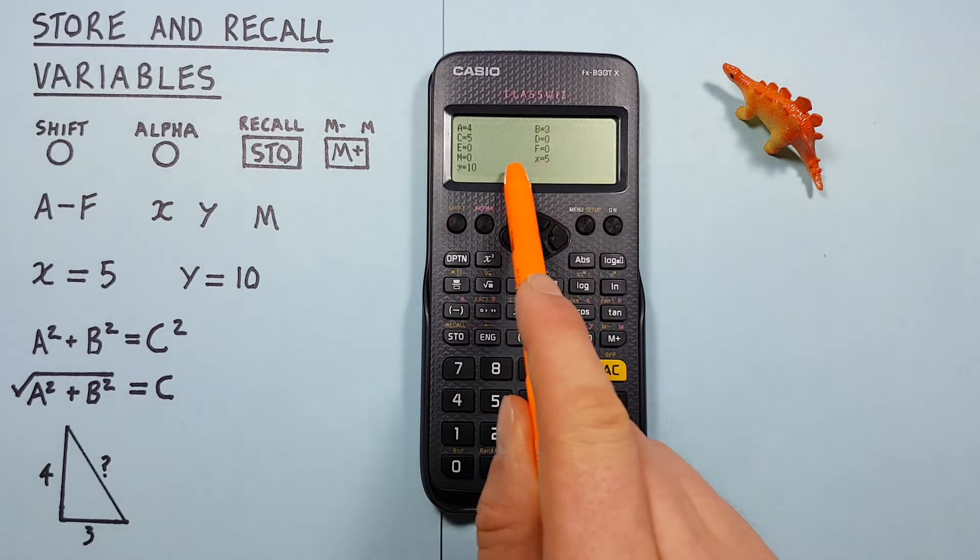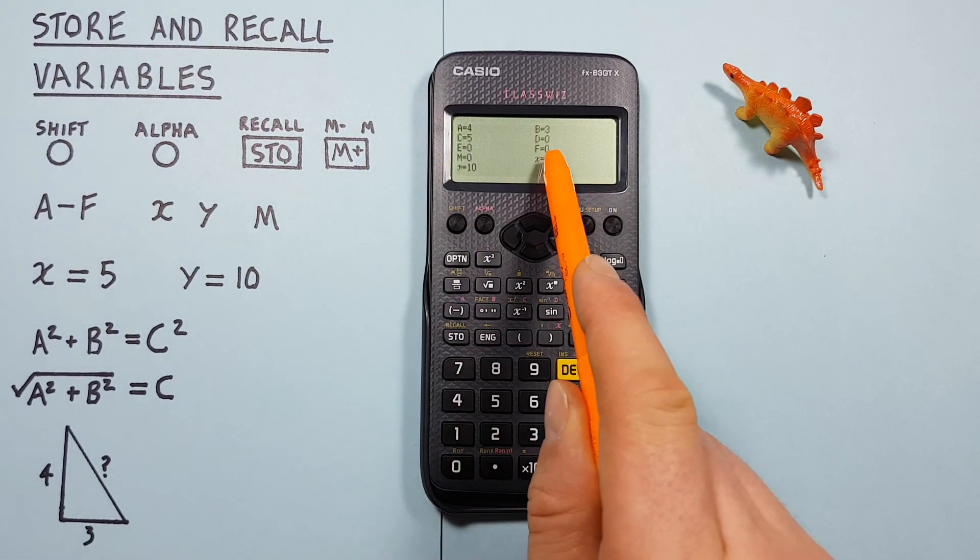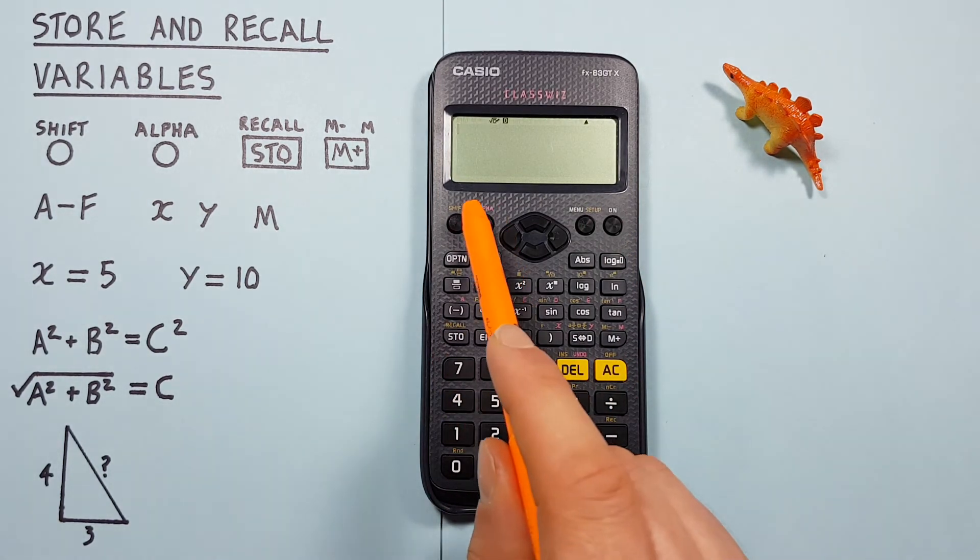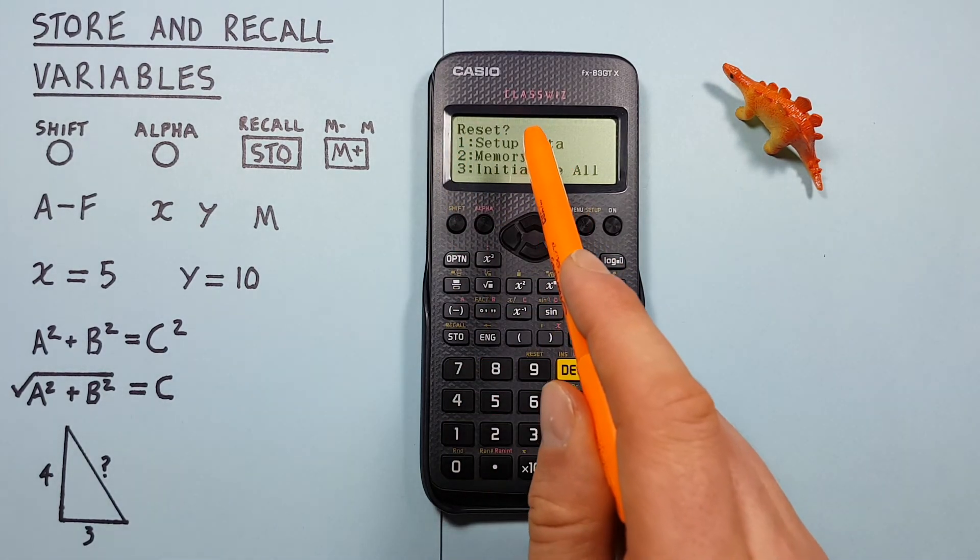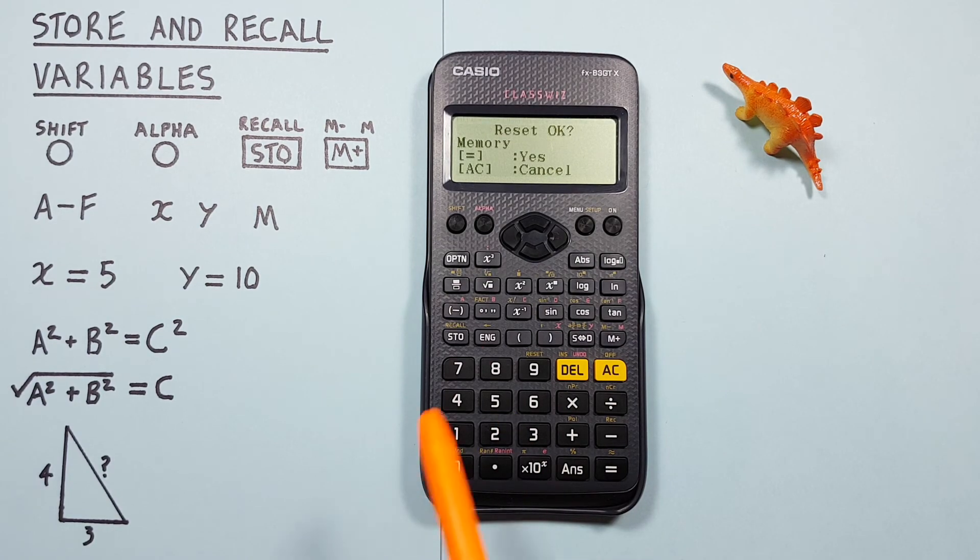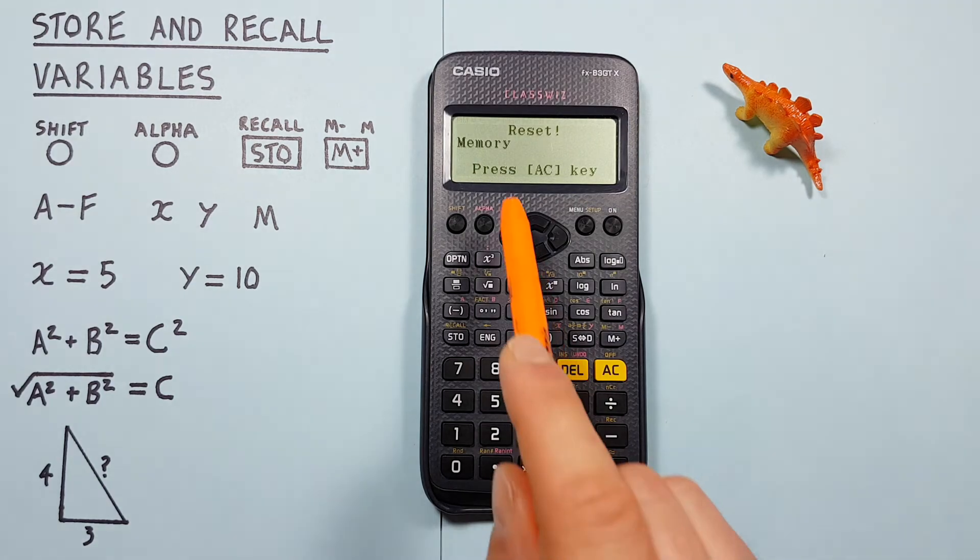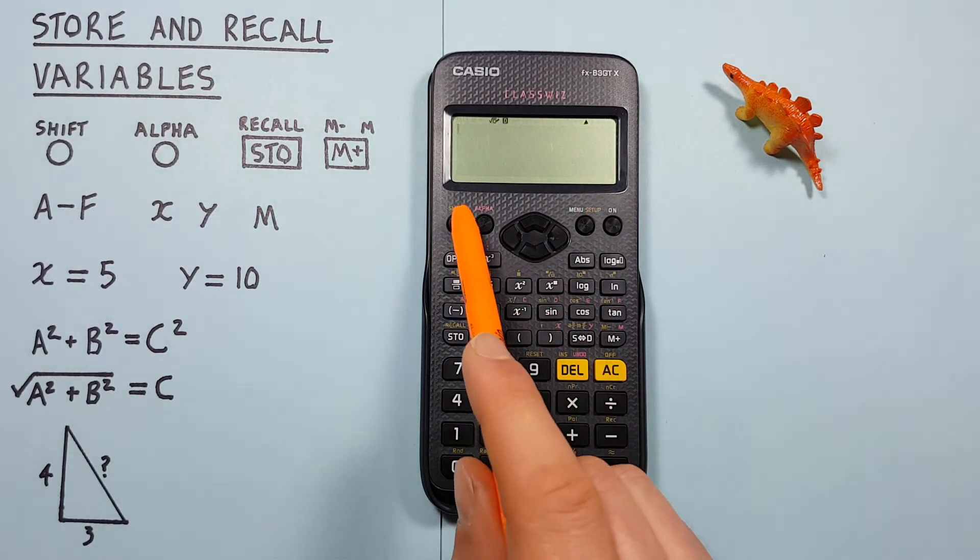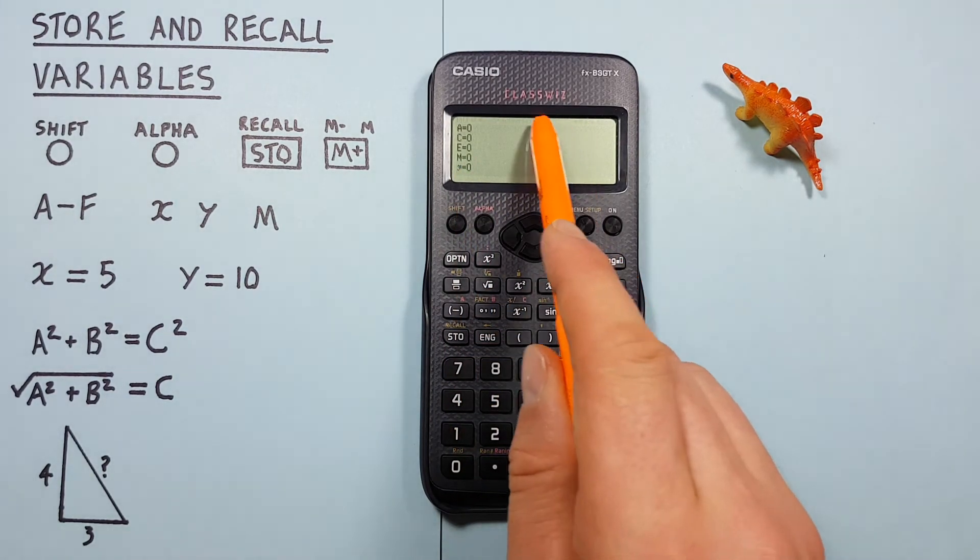We can clear all our individual memory slots the same way by storing 0 into them. Or if we want to clear them all we can do shift 9 which brings up our reset menu, and then we can press 2, and then select reset memory, press equals. Our memory has been reset. And if we check our recall memory screen it's all zeros.